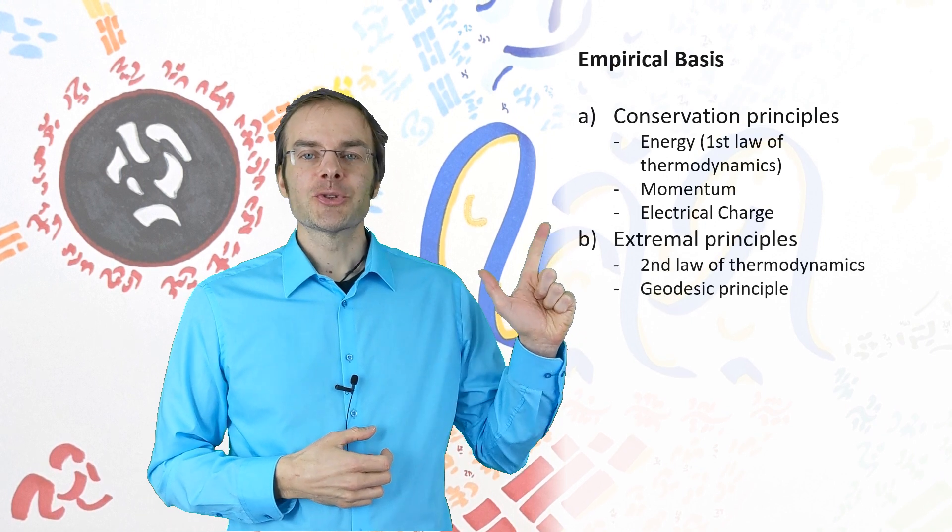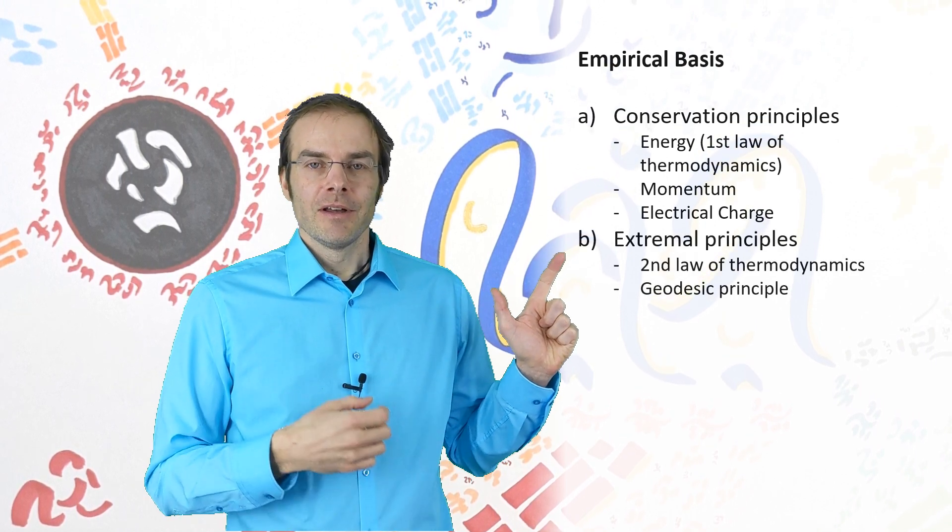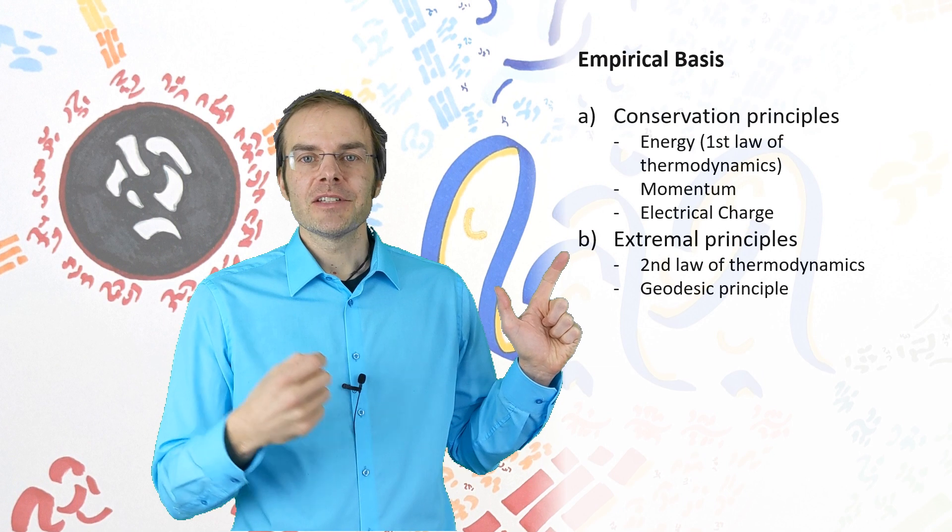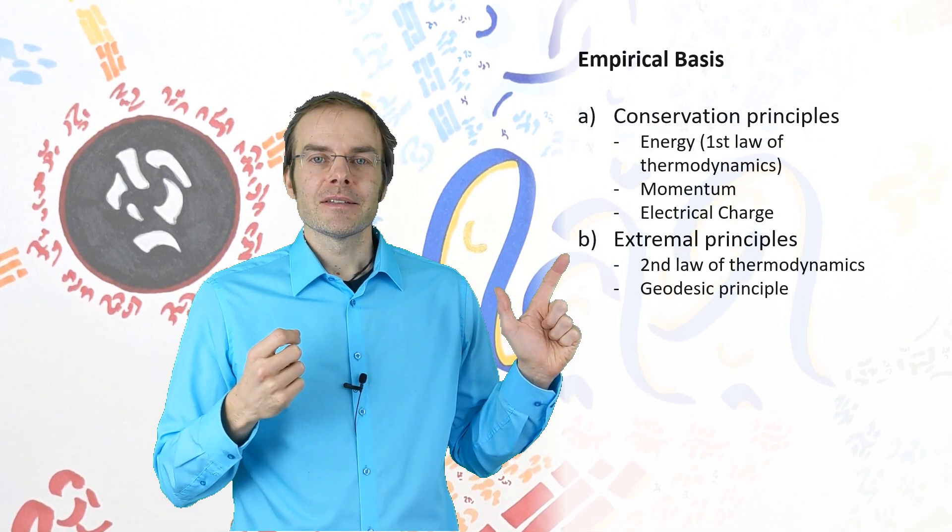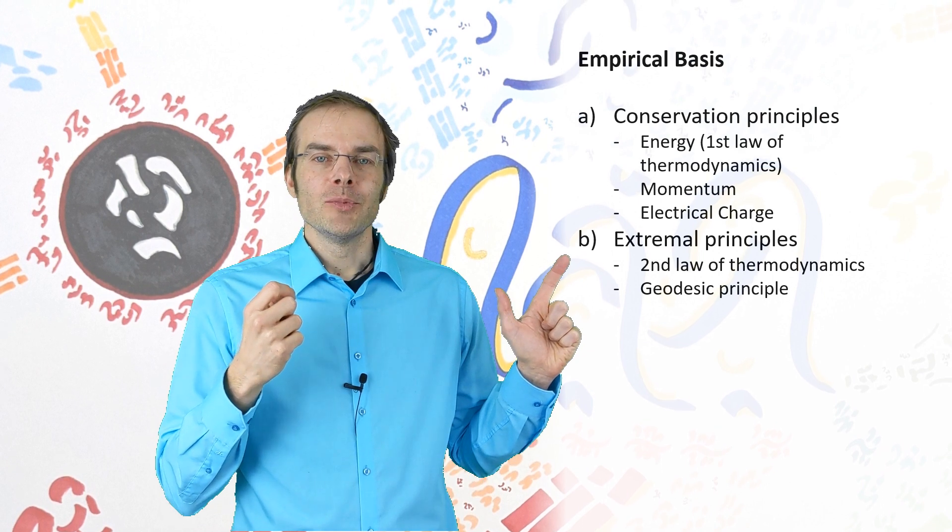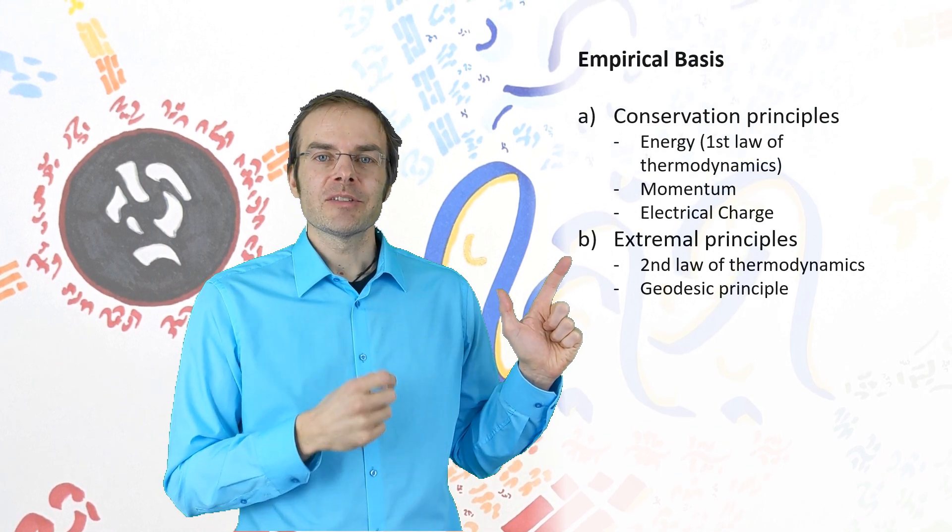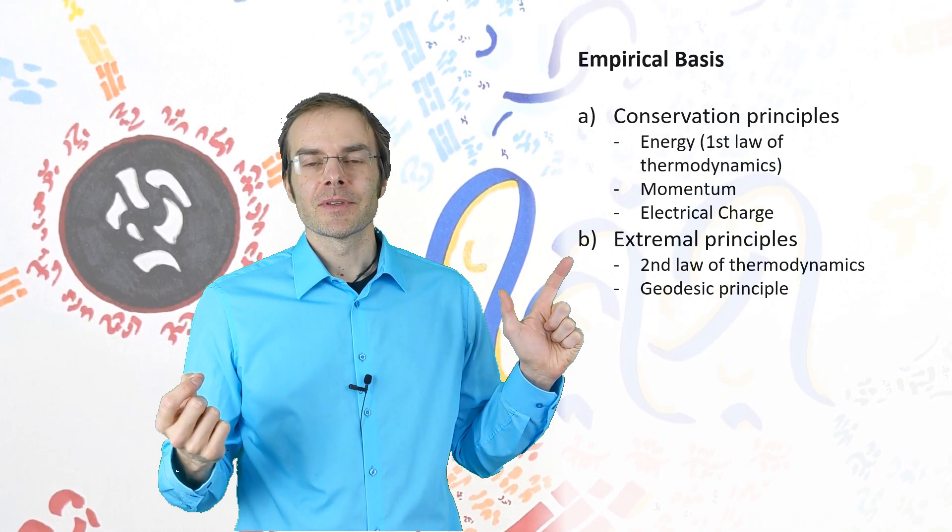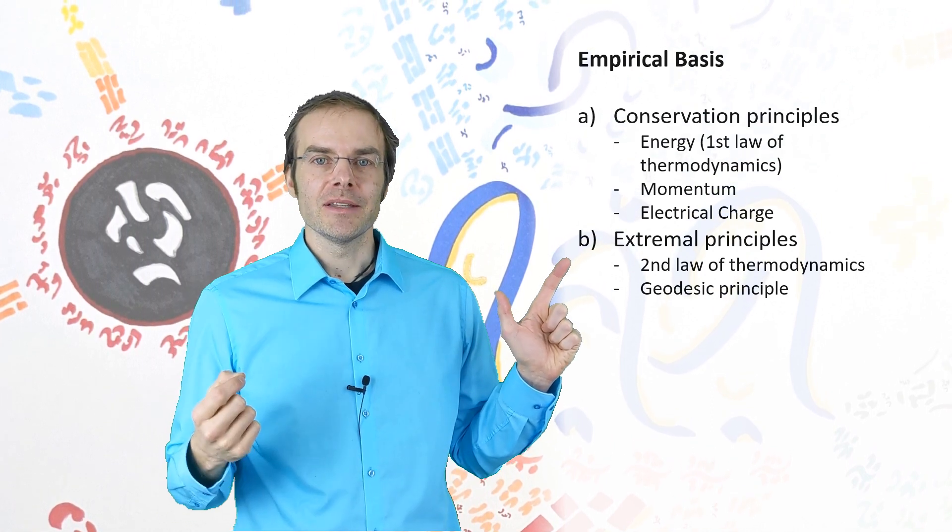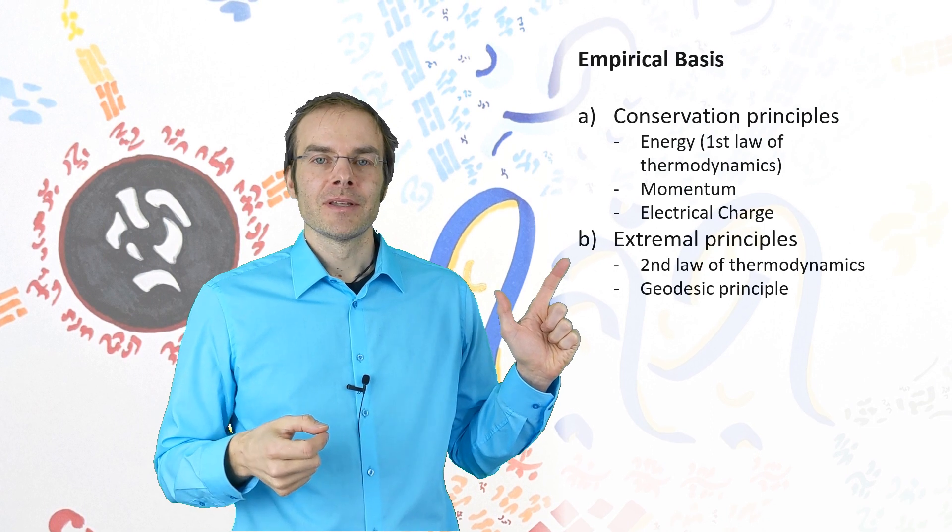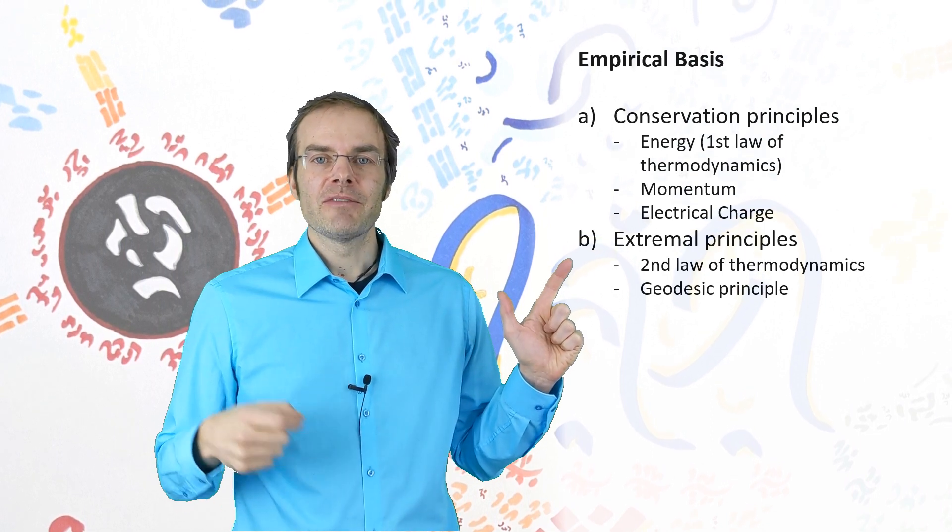Second, there are extremal principles in nature as the maximization of entropy in all physical processes, or that movement always takes place on geodesic lines, so straight lines in relation to the space they are embedded in and not in serpentines. These things can be described by variational calculus.